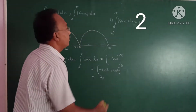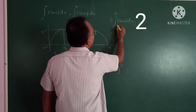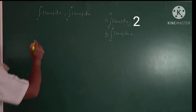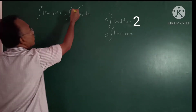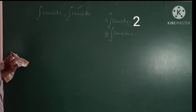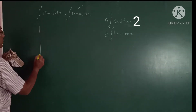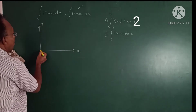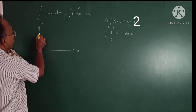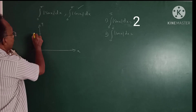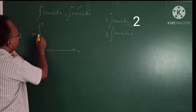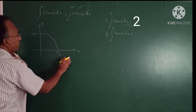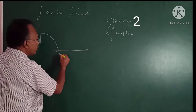Similarly, for the integral of modulus cos x dx. Looking at the diagram: x-axis, y-axis. Cos 0 = 1, so the graph starts at y = 1. From 0 to π/2, cosine is in the first quadrant above the x-axis.